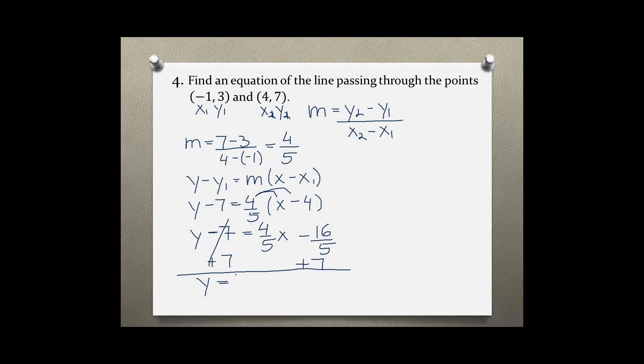y equals 4 over 5x and right here we should do a little side work again. negative 16 over 5 plus 7. We can make this a fraction by putting it over 1. To add fractions we need the same common denominator which is 5. So multiply denominator and numerator by 5.